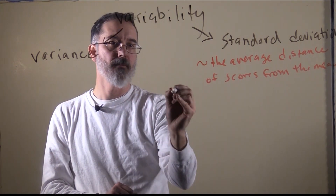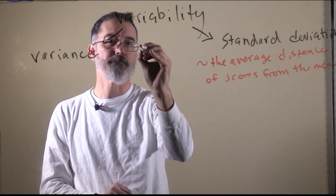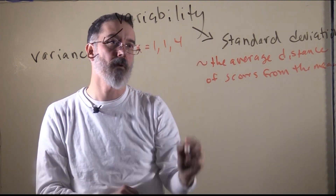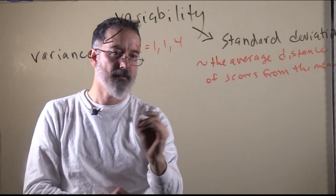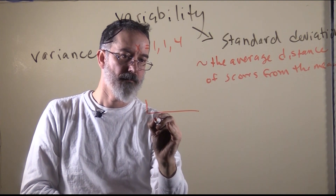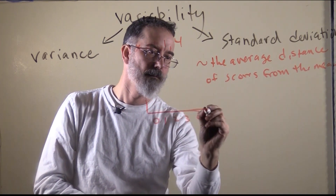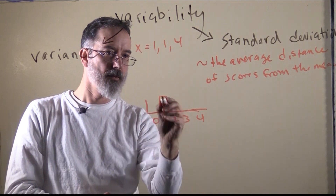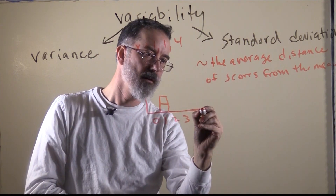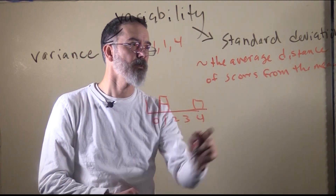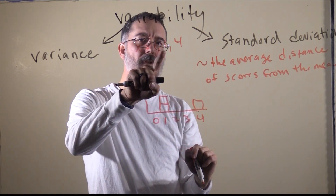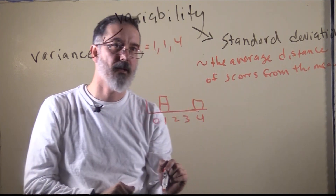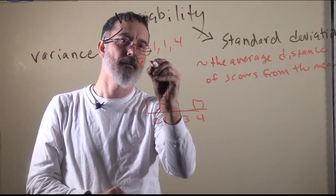Let us do an example. Let us say we have a data set with three data points: 1, 1, and 4. We could draw this out. So we have two 1s and one 4. We need to know what the mean is. So 1 plus 1 is 2, 2 plus 4 is 6, divided by 3 scores — the mean is 2.